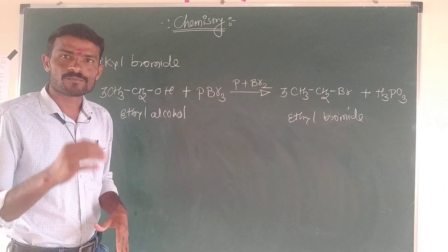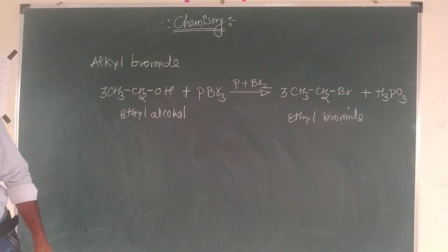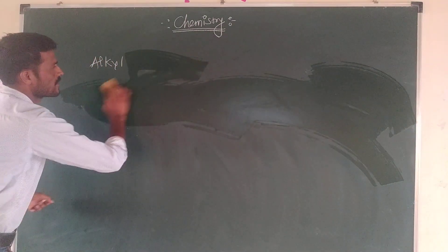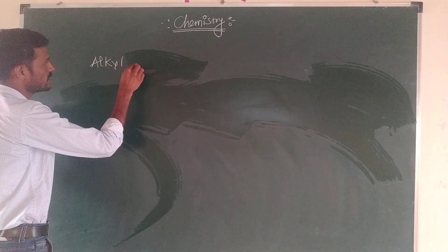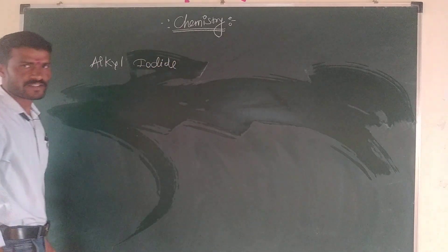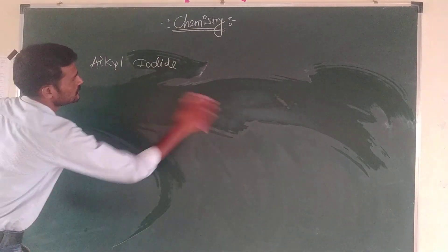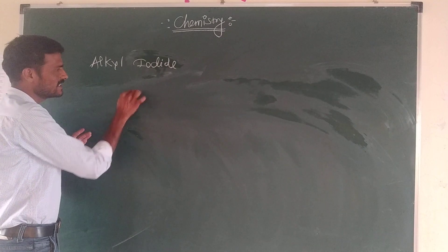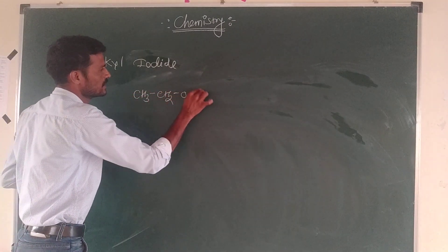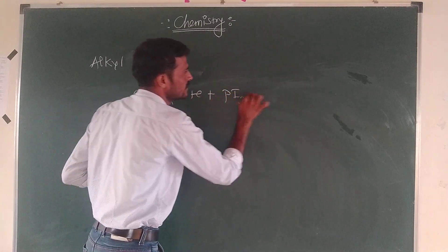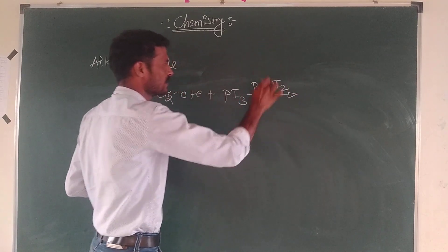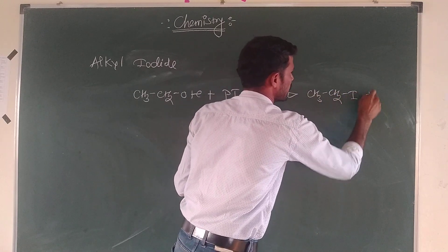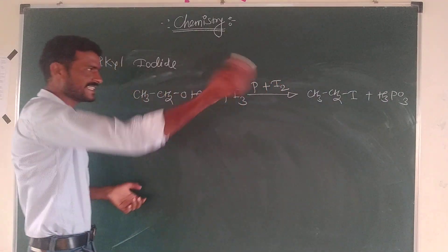I will use phosphorous triiodide. Phosphorous triiodide — CS3CO2OH with phosphorous triiodide in the presence of red phosphorus and iodine molecules. The product is H3PO3, reaction 3.